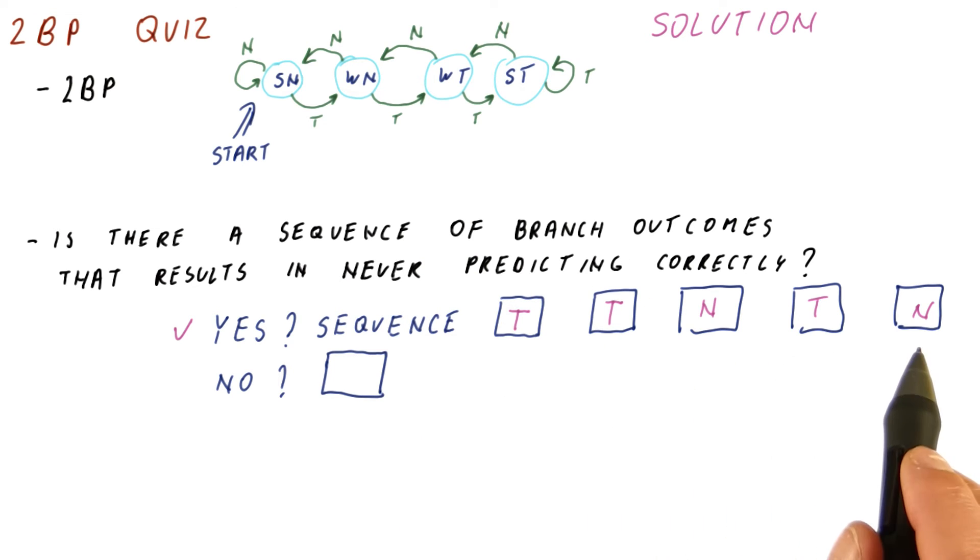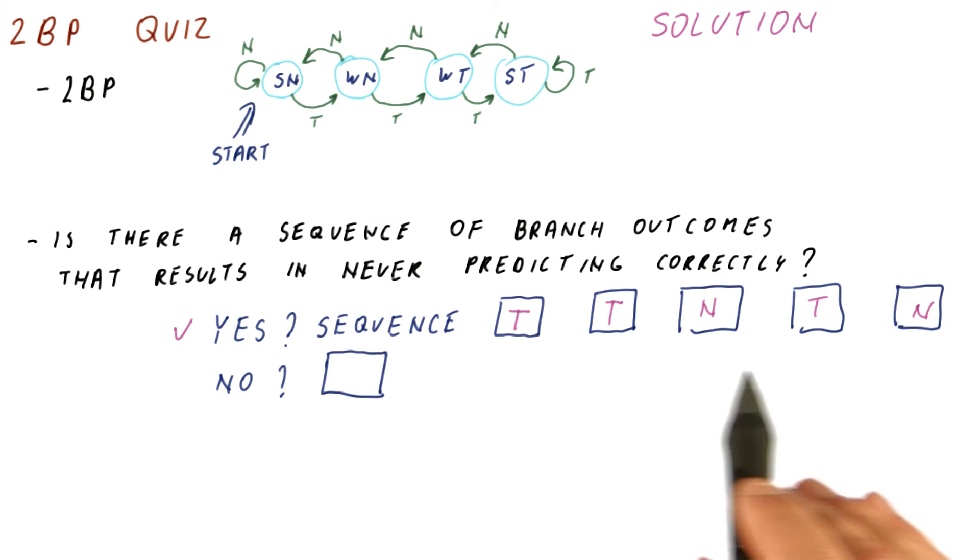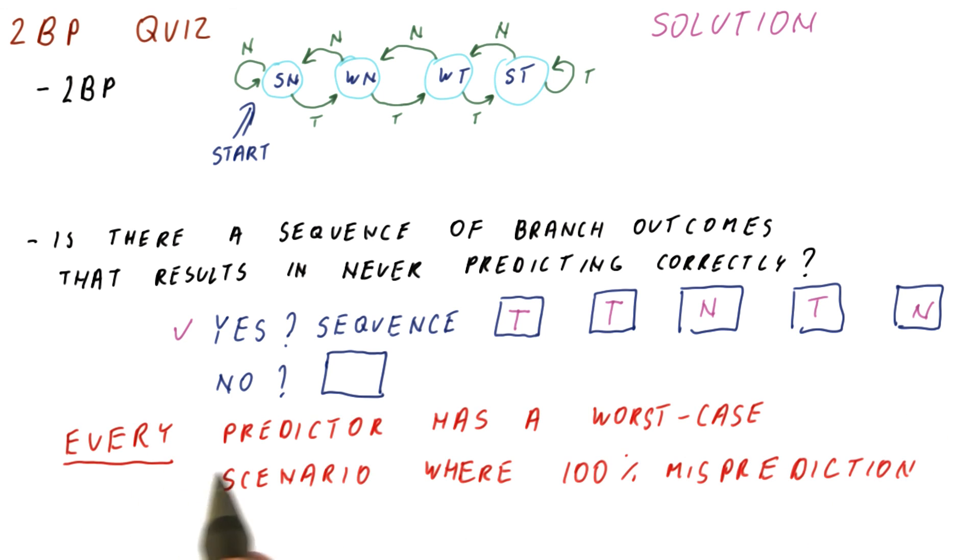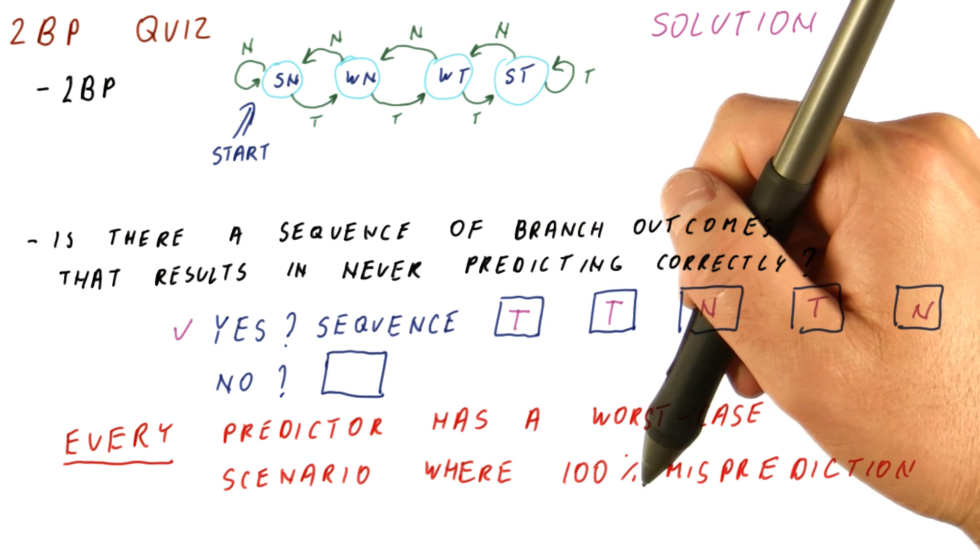Note that for this particular sequence, there is a way to change this predictor so that this behavior doesn't result in 100% misprediction. But in general, every predictor, no matter how it's organized, will always have some sequence as its worst possible outcome. It's just a matter of how likely is that sequence. A good predictor will not have this worst case behavior for something that is a very likely sequence to happen. So again, every predictor has a worst case scenario where it's doing 100% mispredictions.